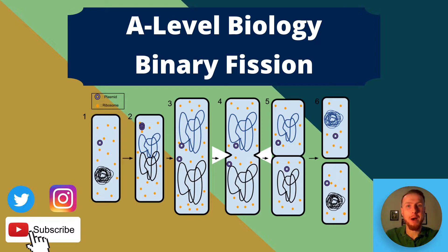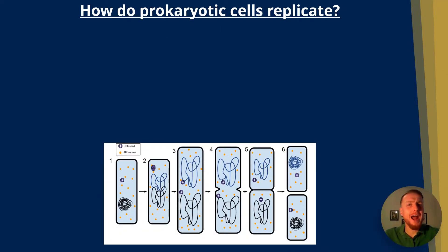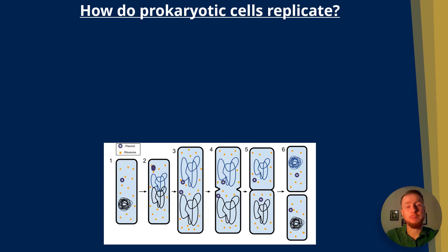So stay tuned, guys. Don't forget to like, comment, and subscribe. So A-level biology — binary fission. How do prokaryotic cells replicate? Well, they do this by a process known as binary fission.